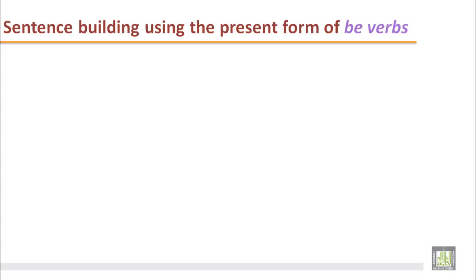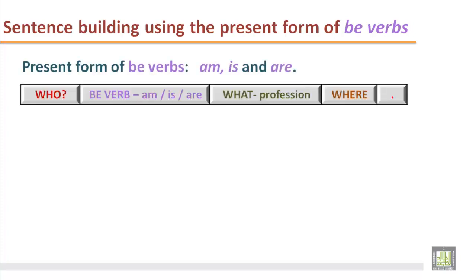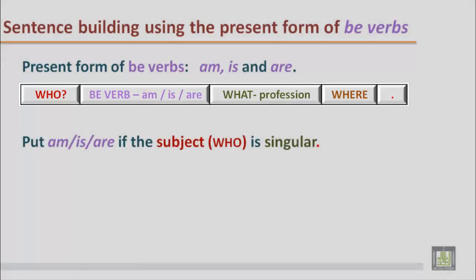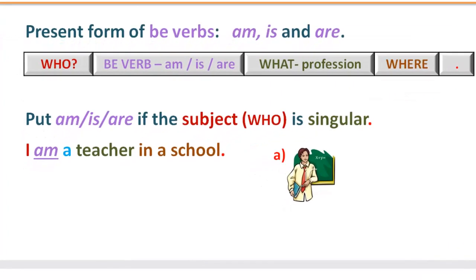Sentence building using the present tense of BE verbs. We have BE verbs in the present tense form like am, is, and are. Here is the structure: you can find who — the subject — and there are BE verbs like am, is, and are. The third step is professions, and the last two steps are about where and the full stop. Put am, is, or are if the subject is singular.